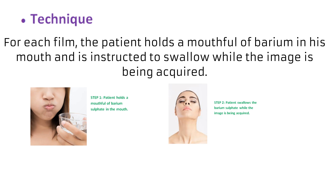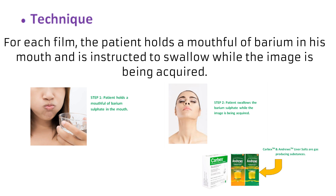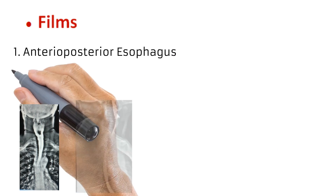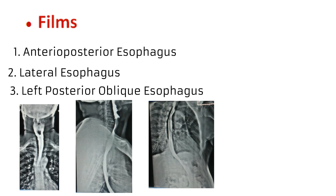If it were a double contrast exam, it's basically the same thing, except that the patient is given a gas-producing substance before the barium. By performing the technique of swallowing each time, the following images are acquired: an anterior-posterior, lateral, and left-posterior oblique of the esophagus. As you may have observed, these images show the esophagus well outlined compared to the preliminary images.